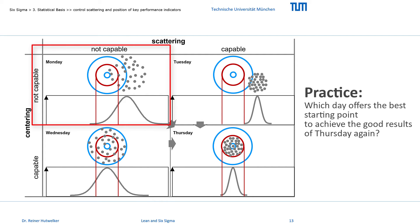We would probably not start with Monday's settings. But what about Wednesday? We have a large spread, but we already produce about 68% suitable cookies right away. If we start with Tuesday's settings, then we only produce scrap. But we have already achieved a very small spread.